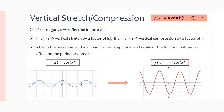Moving on to vertical stretch and compression, represented by the a in our equation. If a is negative, we get a reflection along the x-axis — the graph flips so that what was above the x-axis goes below and vice versa. If the absolute value of a is greater than one, we vertically stretch by a factor of |a|. If |a| is between zero and one, we have a vertical compression by a factor of |a|. This affects the maximum and minimum values, amplitude, and range, but will not affect the period or domain.